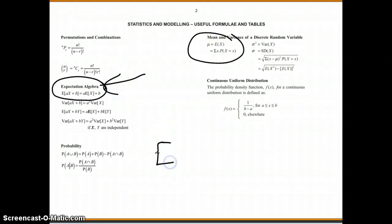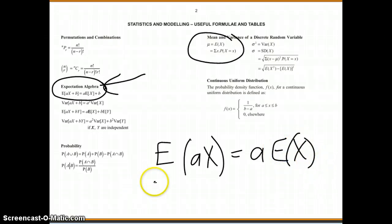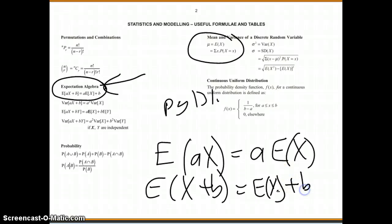So we said the expected value of AX is the same as A times the expected value of X, this is page 131 of your Sigma workbook. And we've got the expected value of X plus B is the same as the expected value of X plus B. And we've got the expected value of AX plus B equals A times the expected value of X plus B. Badly written.